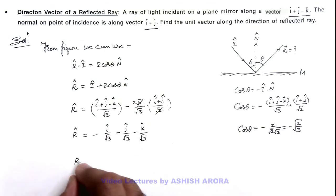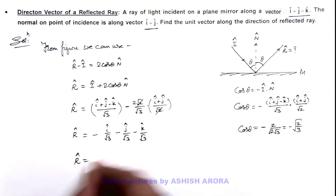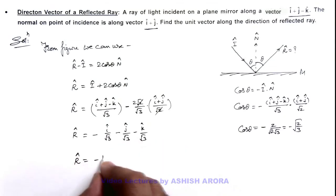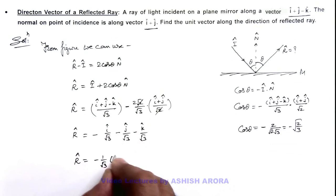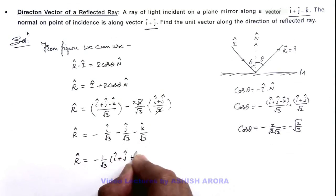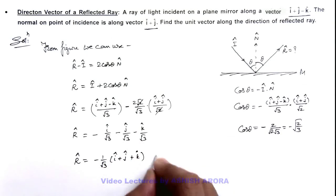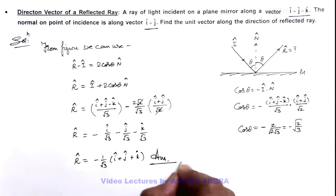So the unit vector along the reflected ray is given as −(1/√3)(î + ĵ + k̂). That is the final result of this problem.